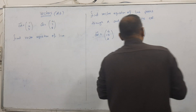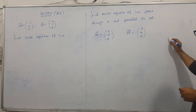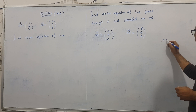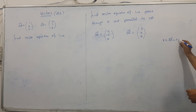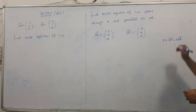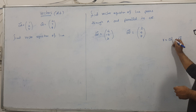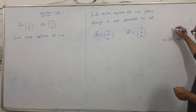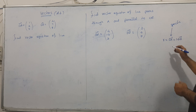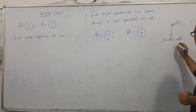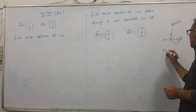Let me start with the base formula. The formula is: r = OA + λ · AB. Here, A is the ending — this is the starting point, a specific point on the line. This A must match the starting letter in the direction vector.